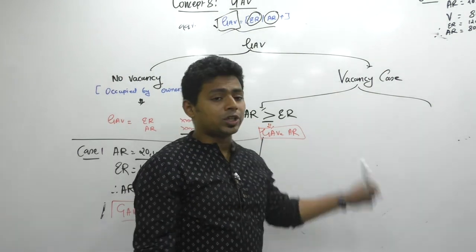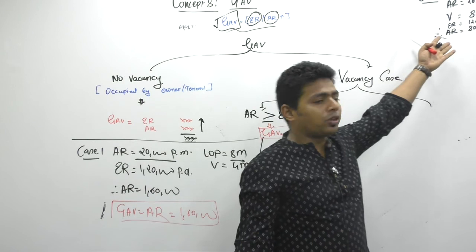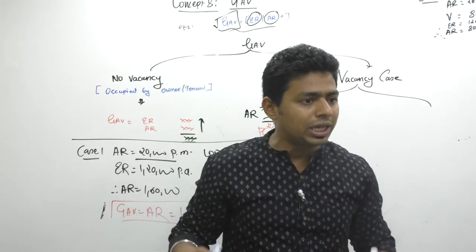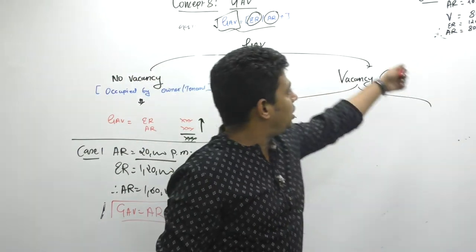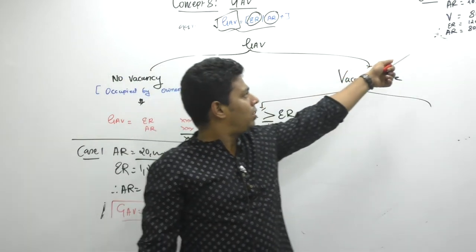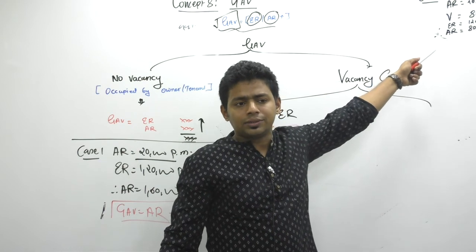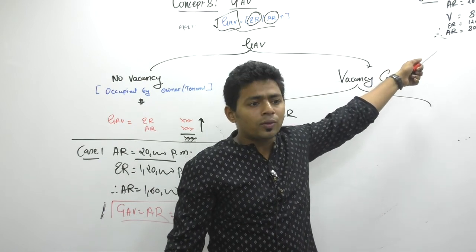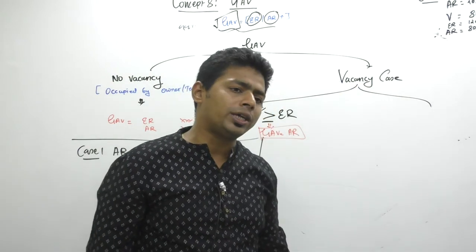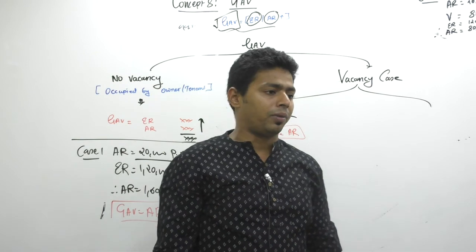In the exam, if you don't know this law, you will take whichever is higher — 1 lakh 20. But this assessor will fight up to the Supreme Court. He will say: that actual rent is lower only because of vacancy, and that vacancy was genuine. How will you prove vacancy was genuine? Simply, you can take the electricity bill to the income tax department.